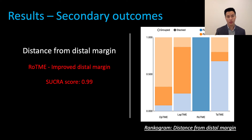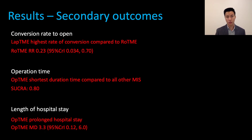However, when we take a closer look at the secondary outcomes, we find that robotic surgery achieved statistically significantly improved distal resection margins compared to all other surgical techniques, with a probability close to 100%. Other notable secondary outcomes include laparoscopic surgery having the highest rates of conversion to open surgery compared to robotic surgery, and open surgery having the shortest operation time but the longest length of hospital stay.